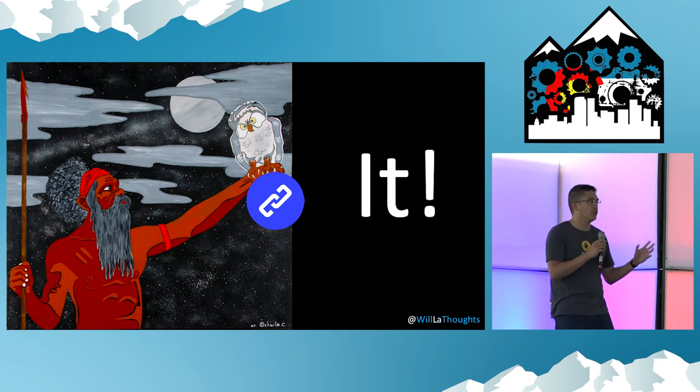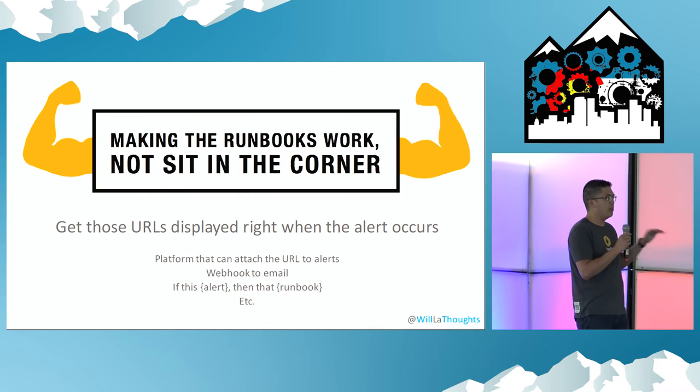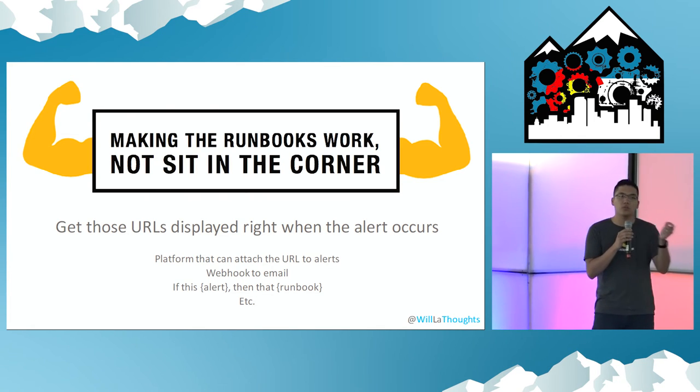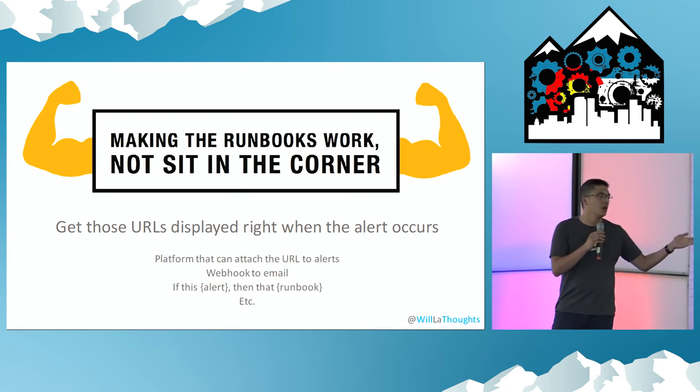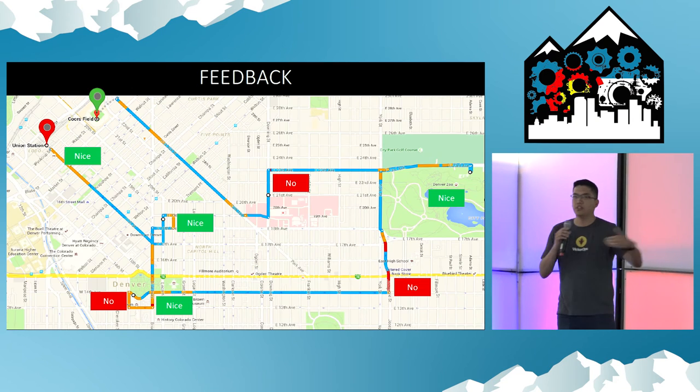So how do you let the URL get there when you need it most? You got to not let it sit in the corner and put it to work. You want to get these URLs displayed right when the alert occurs, whether it's a platform that does it for you, a webhook to an email whenever the alert hits. Just having this mindset of if this alert, then this runbook.